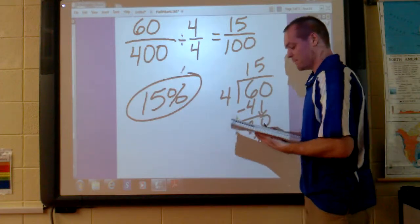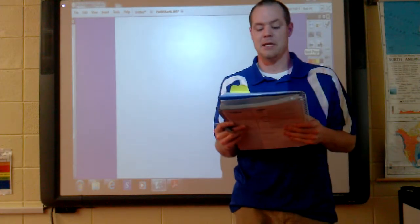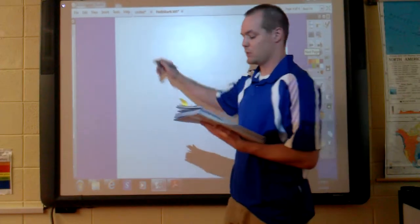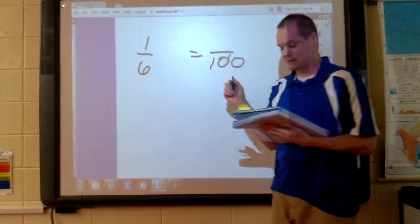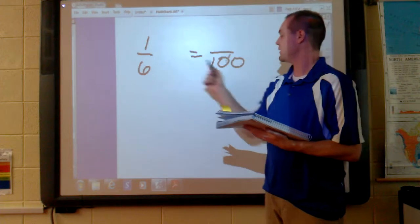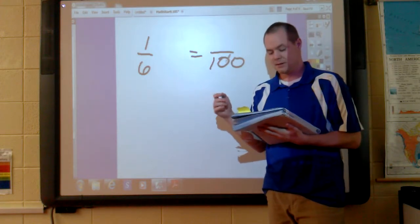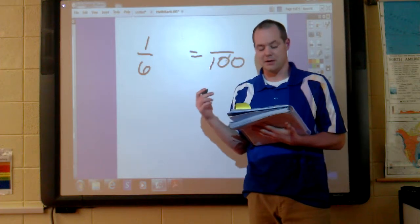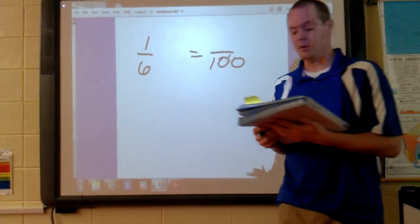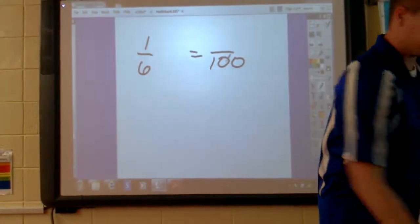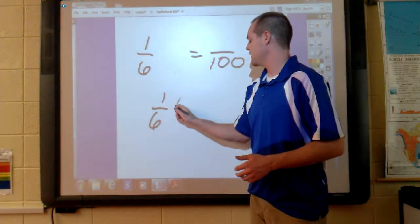Example number three. Some fractions are not easily renamed as parts of 100. Let's suppose that 1/6 of the students rode the bus to school. What percent of the students rode the bus to school? So we need to figure out 1/6 as a percentage. We need to get 6 to a denominator of 100. Now, first, since 100 is not a multiple of 6, there is no whole number by which we can multiply the numerator and the denominator of 6 to rename it with a denominator of 100. However, we can find 1/6 of 100 by multiplying and then dividing. We need to find out what 1/6 of 100 is.